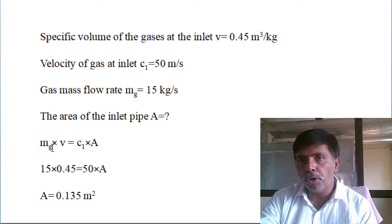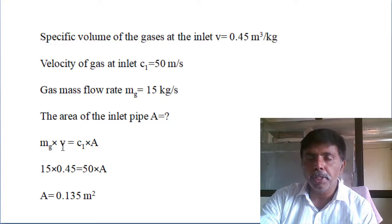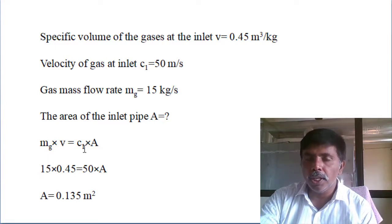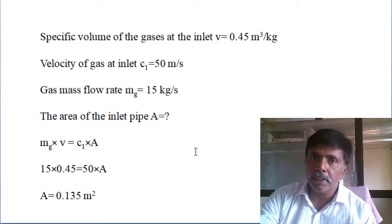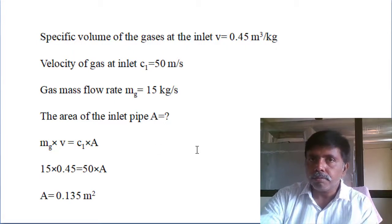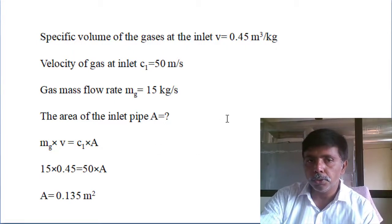If you have any doubts, apply units and dimensions: mass in kg/s, specific volume in m³/kg — kg cancels to give m³/s, which equals velocity in m/s times area in m². So m³/s is the volumetric flow rate. That is basic. If you understand this, there is no issue.